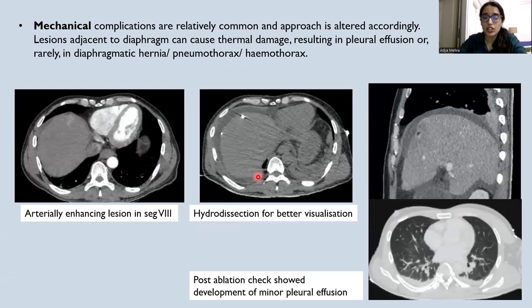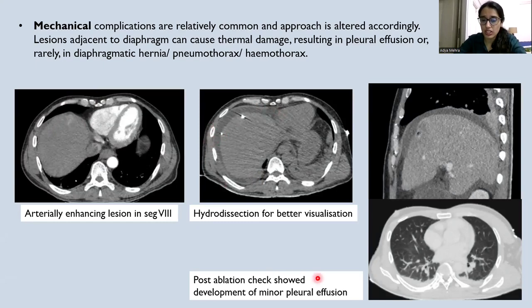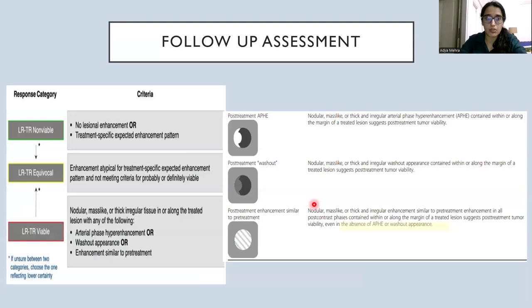Major complications can be vascular — bleeding and thrombosis — and biliary, including bile duct injuries and biloma formation, especially with lesions adjacent to the bile ducts. Liver abscess can be seen in high-risk patients and prophylactic antibiotic therapy is a must. Tumor seeding can occur when the lesion is subcapsular, and complete needle tract ablation with cauterization on antenna withdrawal is protocol. In lesions adjacent to the diaphragm, as seen here in segment 8, hydrodissection was done for better visualization, and post-ablation check CT showed development of a minor pleural effusion.